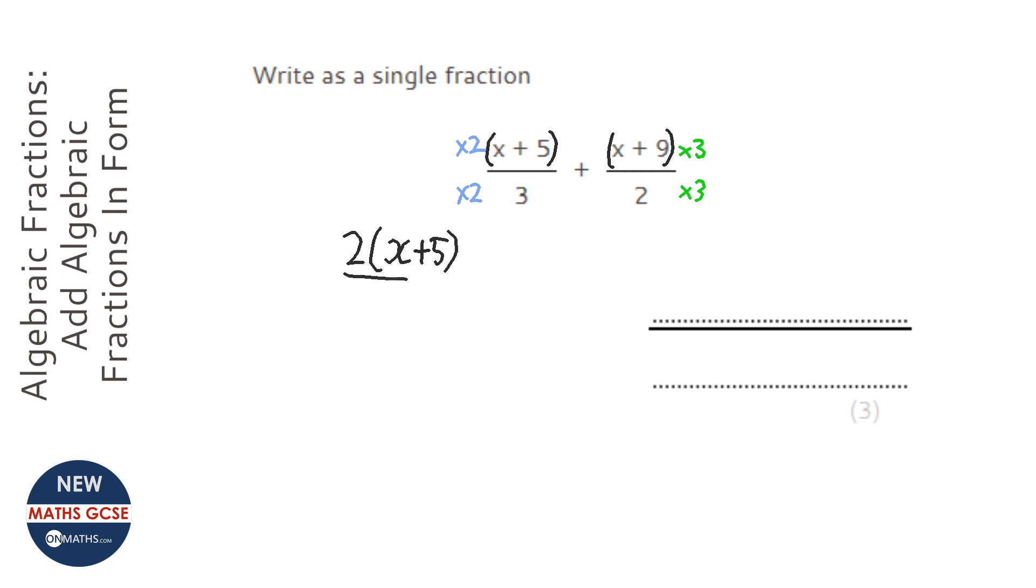A common mistake here would just be doing 2 times x and then plus 5, and so the bottom will be 6.